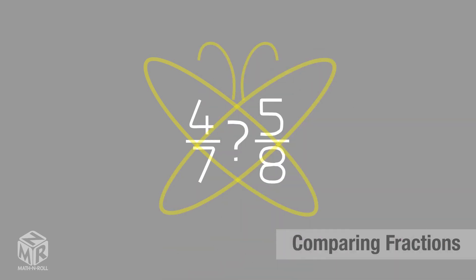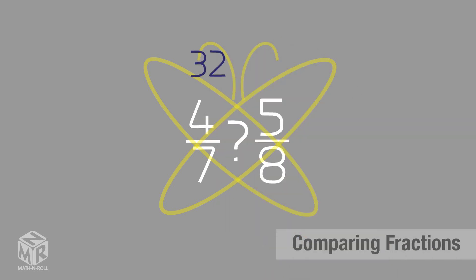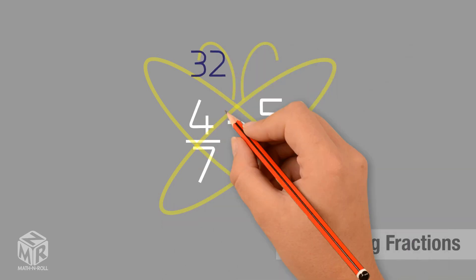Multiply the numbers inside of each wing. 4 times 8 equals 32, and 5 times 7 equals 35. Now we compare the numbers inside of the antenna. 32 is less than 35. This means that 4 over 7 is less than 5 over 8.